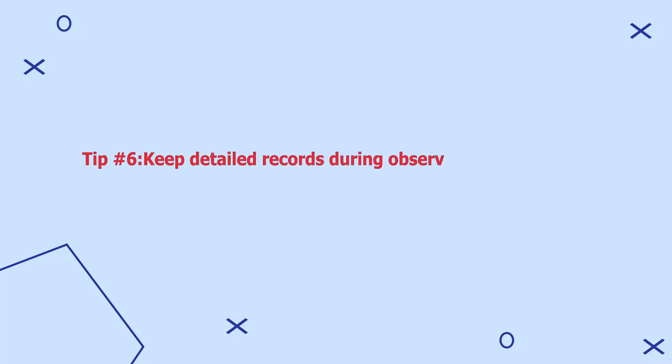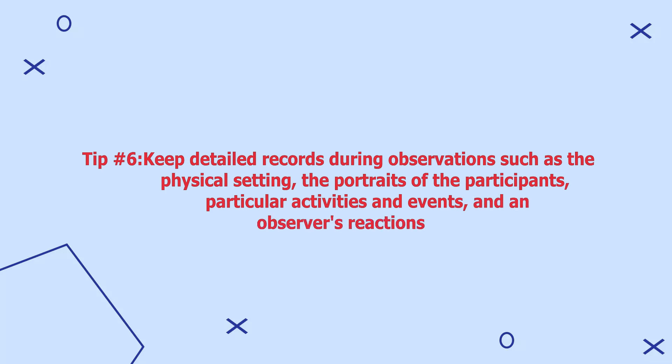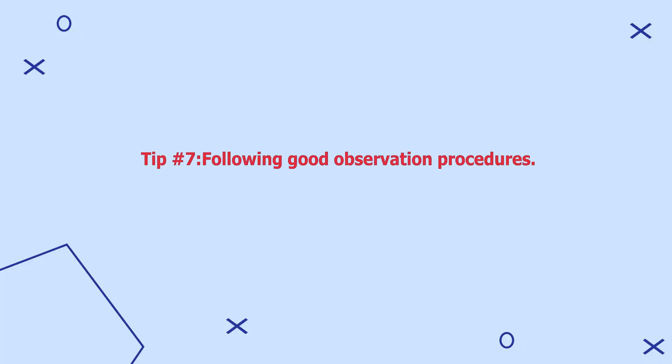Tip number six: keep detailed records during observations, such as the physical setting, the portraits of the participants, particular activities and events, and the observer's reactions. An observer should also provide clear descriptions of what happened and provide insights, personal reflections, initial interpretations, and breakthroughs. Tip number seven: follow good observation procedures. After making observations, an observer should withdraw from the site and thank the participants, while also updating them on how the collected data will be used and their ability to access the study results.